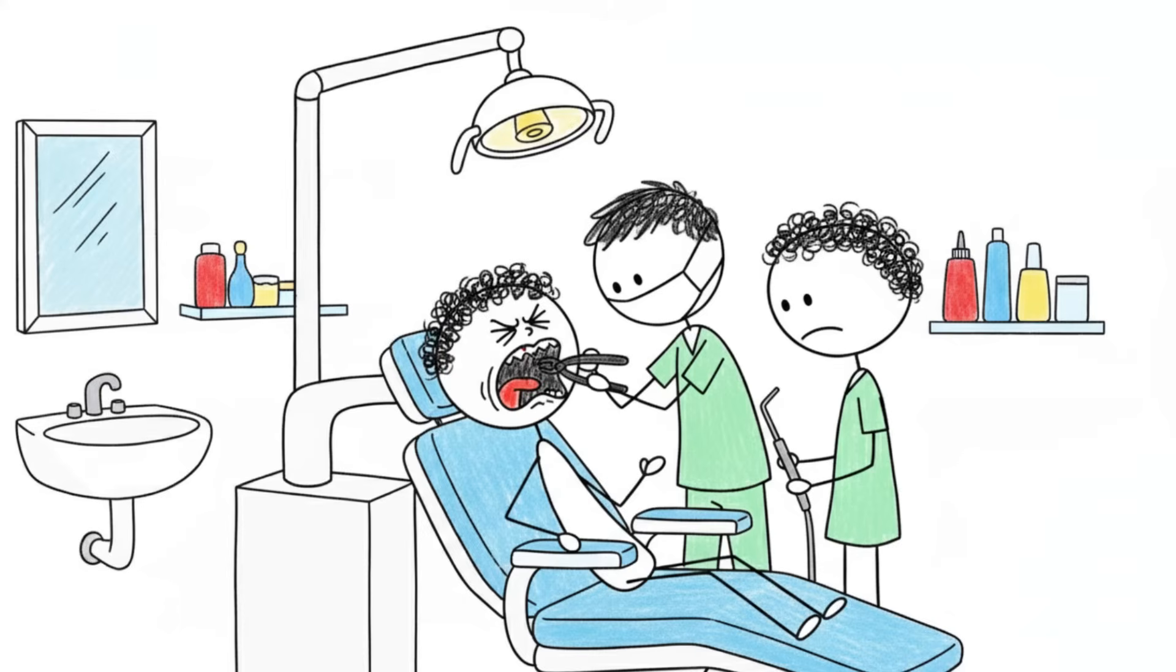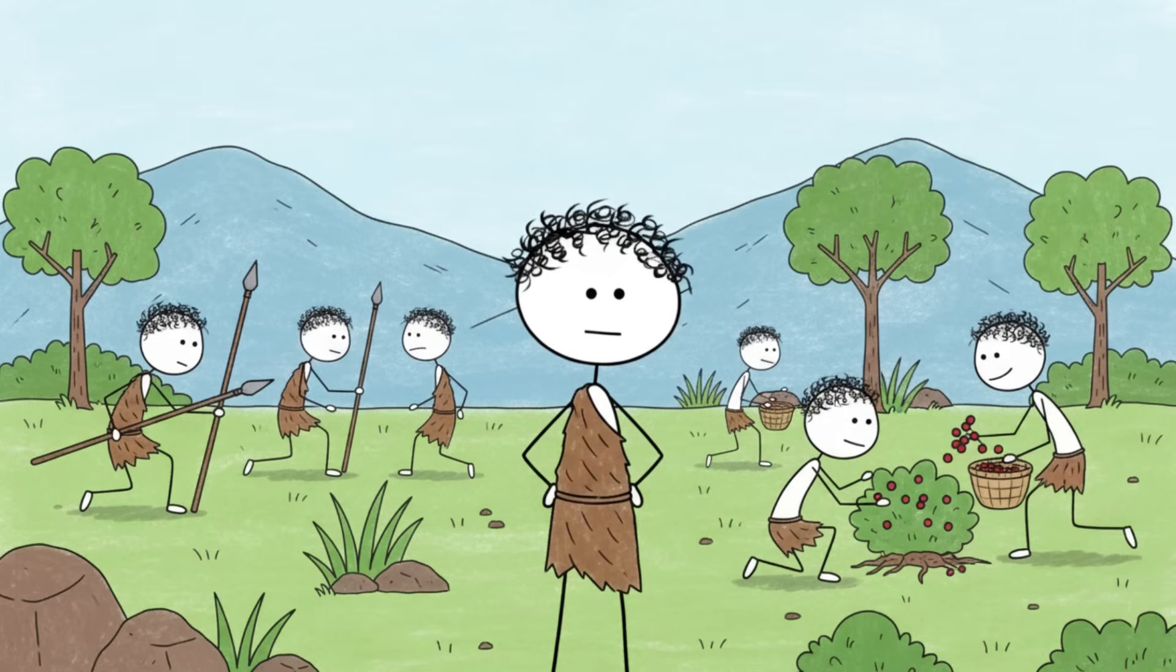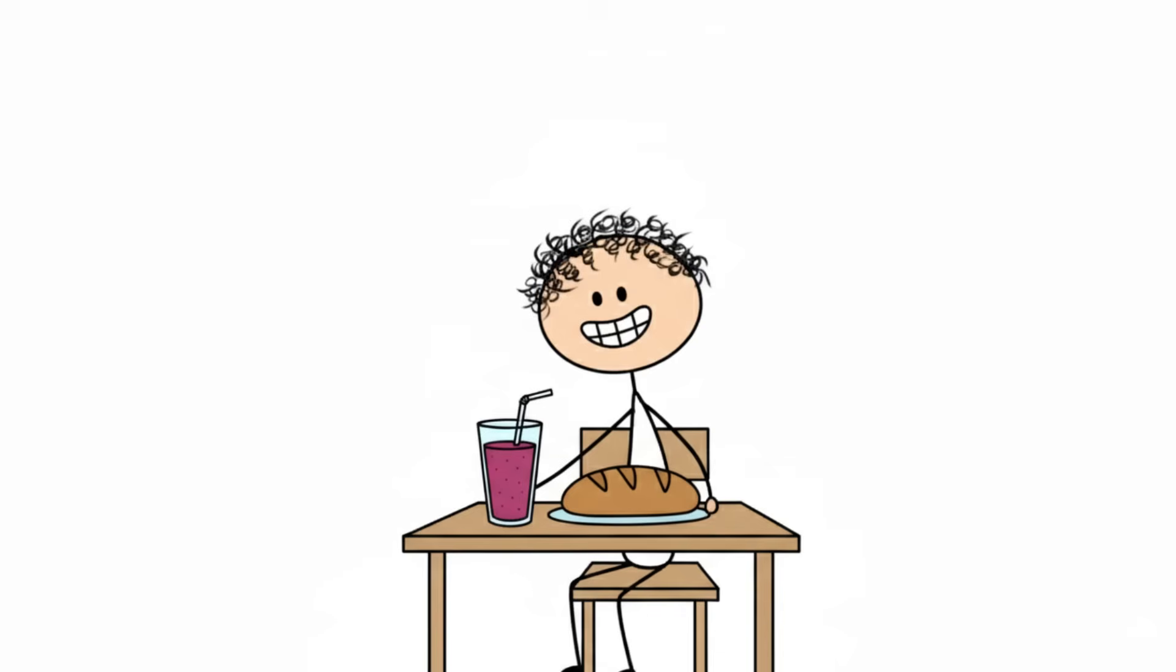This historical moment is why orthodontists exist. Most of the tooth crowding, misalignment, and impacted wisdom teeth that plague modern humans are not an accident of nature. They are a direct biological consequence of the last 10,000 years of culinary history. Your perfectly straight smile is an artificial correction for a problem we created the moment we boiled the first pot of mushy porridge.